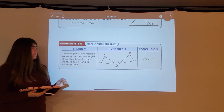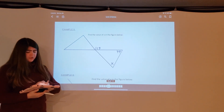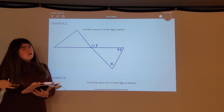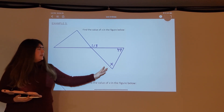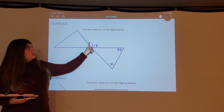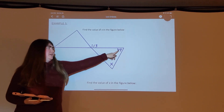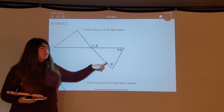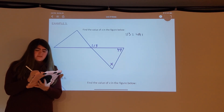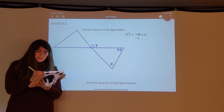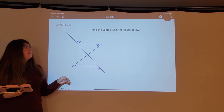Now let's use the exterior angle theorem in an example. Find the value of x: we have angles x and 49 as remote interior angles, and the exterior angle is 113 degrees. So 113 equals 49 plus x. Subtracting 49 from both sides gives x equals 64 degrees.